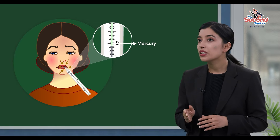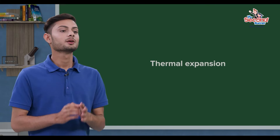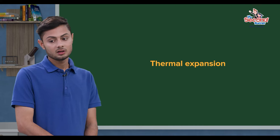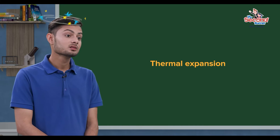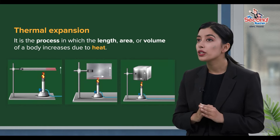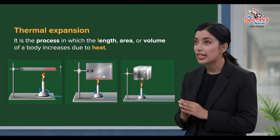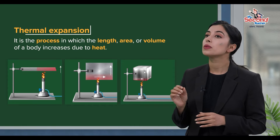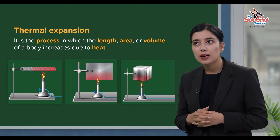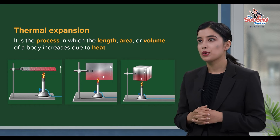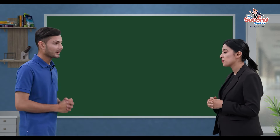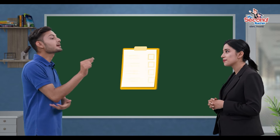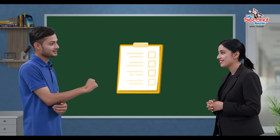It's going to cause thermal expansion — meaning the volume of mercury increases. Thermal expansion is a new topic, Teacher. I don't understand it. It involves changes in length, area, and volume of a substance. We will discuss thermal expansion in detail in the next chapter.